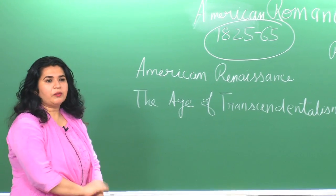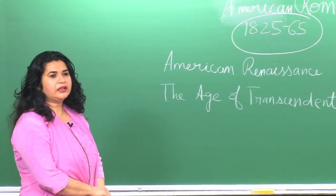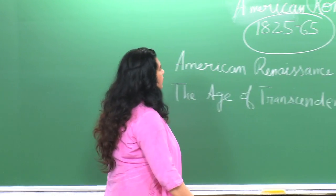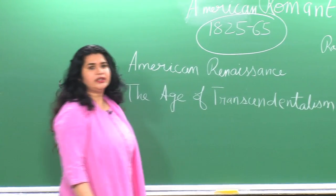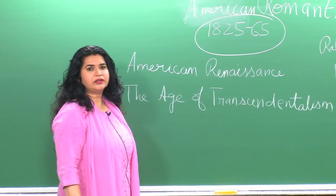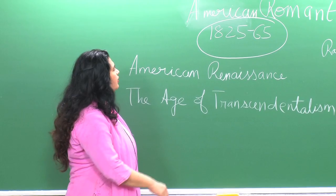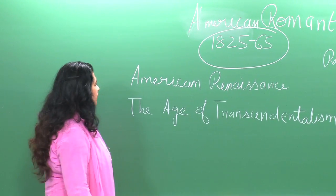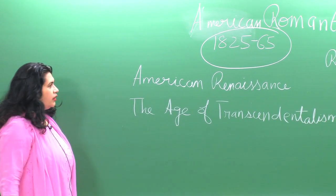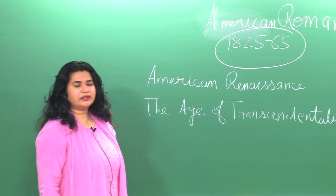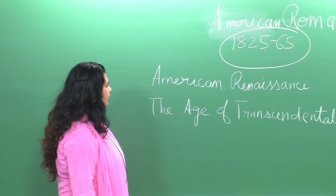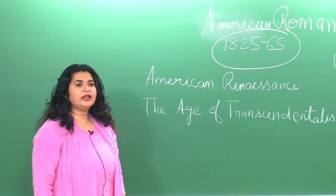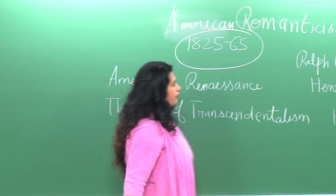Let us move on to talk about American Romanticism now. The key designated period for American Romanticism is from 1825 to 1865. This period is also known as the American Renaissance and more popularly the age of transcendentalism.